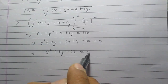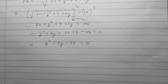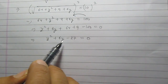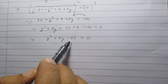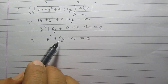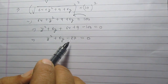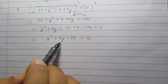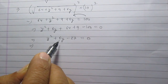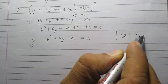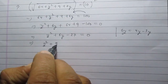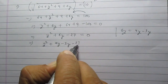This is a quadratic equation in variable y. We use the middle term splitting method to factorize. We need two numbers whose product is 27 and whose difference is 6. Those numbers are 9 and 3, so we split 6y as 9y - 3y, giving us y² + 9y - 3y - 27 = 0.